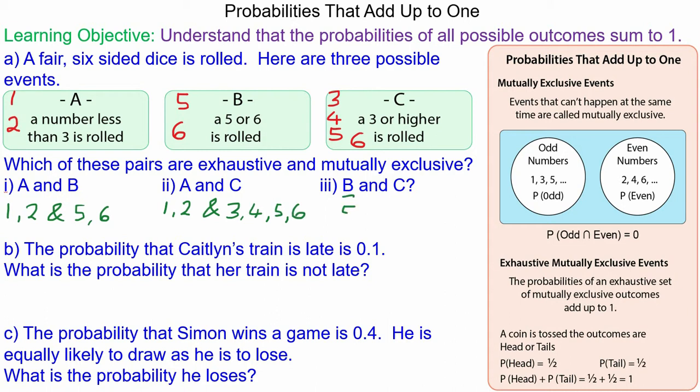For B and C, for B you can get a 5 and a 6, and for C you can get a 3, 4, 5 and a 6. So they are neither mutually exclusive nor exhaustive, because the 5 and 6 are repeated for both, and 1 and 2 are missing.